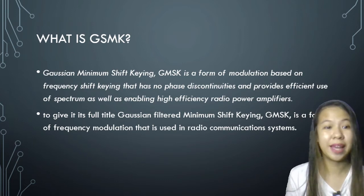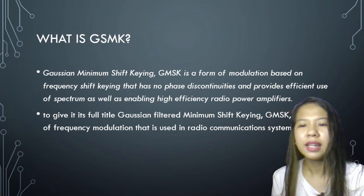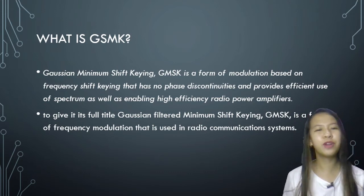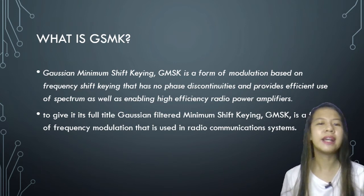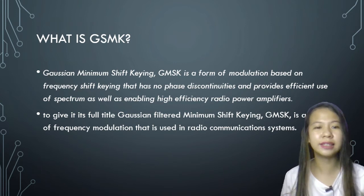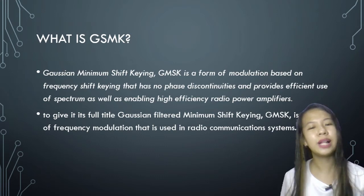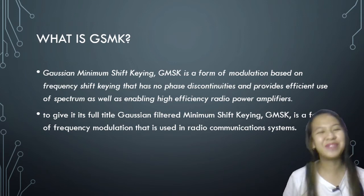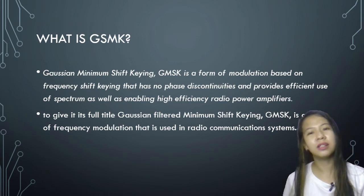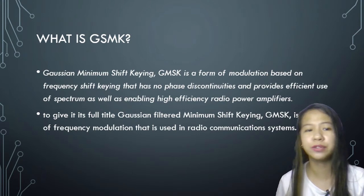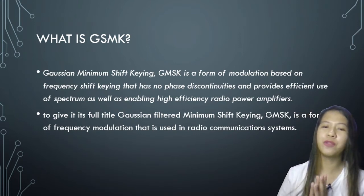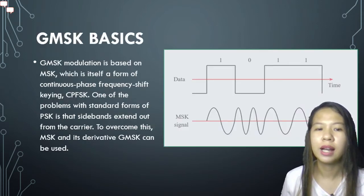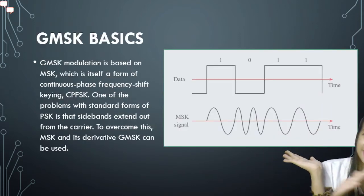So first, what is GMSK? Gaussian Minimum Shift Keying or GMSK is a form of modulation based on frequency shift keying that has no phase discontinuities and provides efficient use of spectrum as well as enabling high efficiency radio power amplifiers. To give its full title, Gaussian Filtered Minimum Shift Keying or GMSK is a form of frequency modulation that is used in radio communication systems. As you can see in the picture.